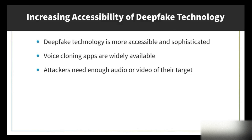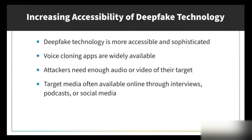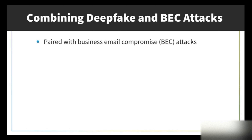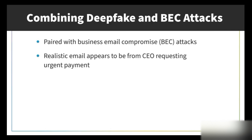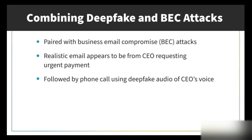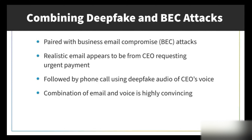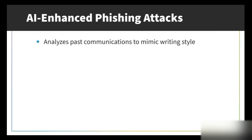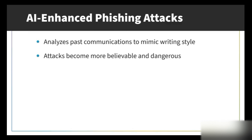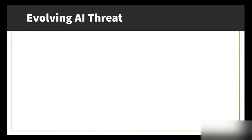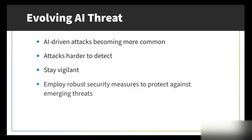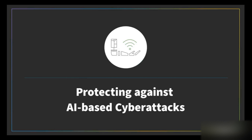Deep fake technology, including voice cloning apps, is becoming more accessible. All attackers need is enough audio or video of their target, often readily available online through interviews, podcasts, or social media. These attacks often pair with BEC — a fake CEO email requesting urgent payment is followed by a phone call using deep fake audio of the CEO's voice, reinforcing the request. AI can also enhance phishing emails by analyzing past communications to perfectly mimic writing styles, making attacks more believable.